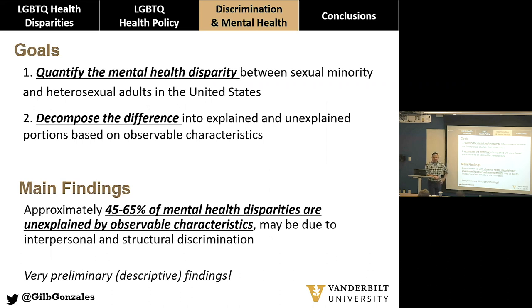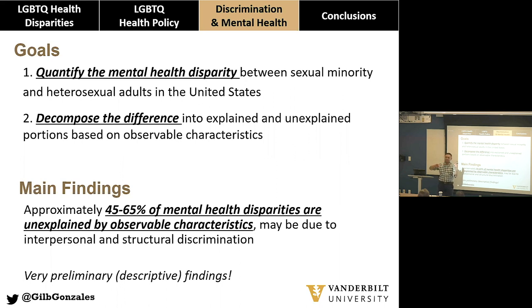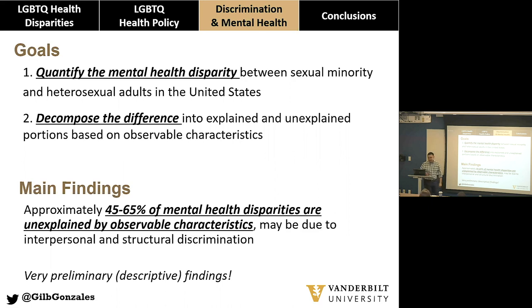This last part is a work in progress, and I could really benefit from your feedback. I want to first estimate how big the mental health disparity is between sexual minorities and heterosexuals. Using decomposition methods, I want to identify how much of that disparity can be explained by observable characteristics in a dataset and how much cannot — because there are many things we don't ask in surveys, such as experiences of discrimination, stigma, and outness for sexual minorities.